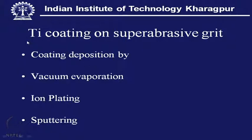Titanium coating on super abrasive grits is given by vacuum evaporation, ion plating, or sputtering — all PVD processes. CVD of titanium within a range around 1100°C is not possible because of the chemical stability of titanium tetrachloride, which does not allow reduction of titanium. These PVD processes are well matched with grain coating.